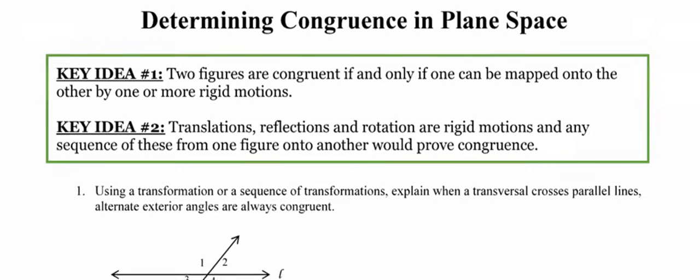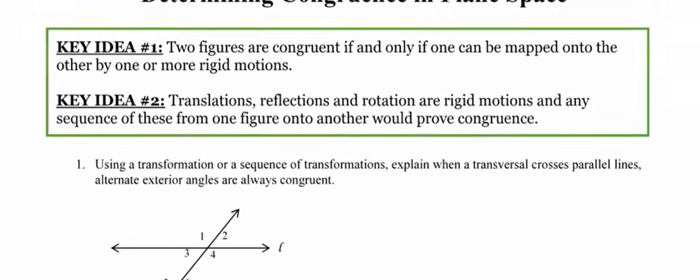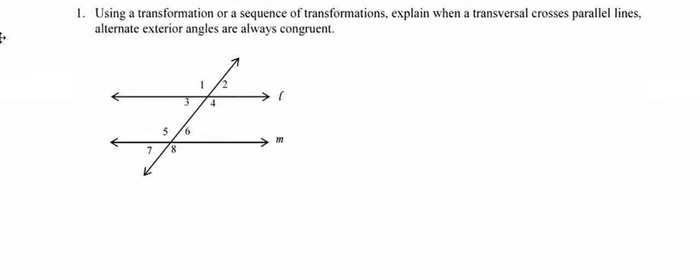Alright, so let's see how we might take a look at an example that's not in the coordinate plane. In example one they're asking us to use either a single transformation or a sequence of transformations to explain how when a transversal crosses parallel lines the alternate exterior angles that are formed are always congruent to each other.